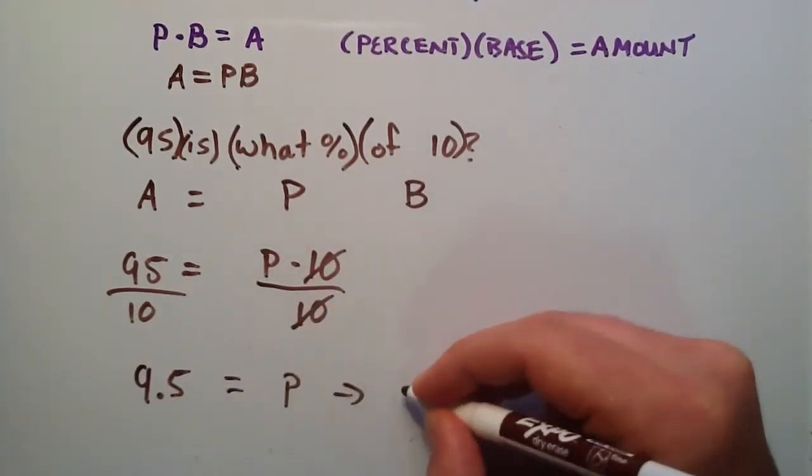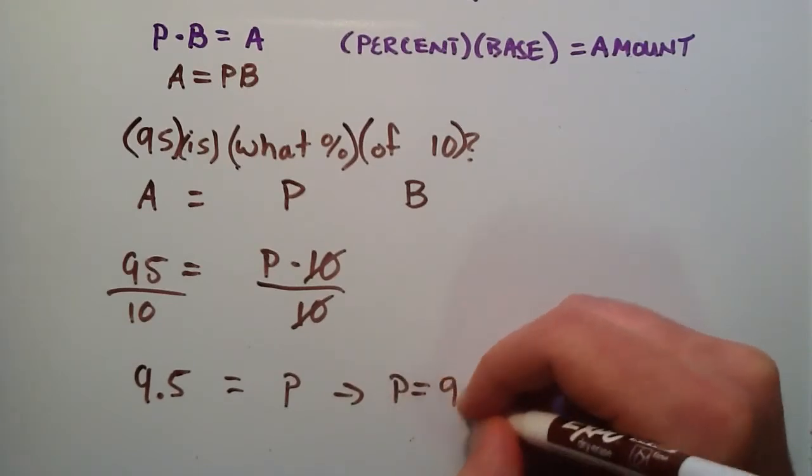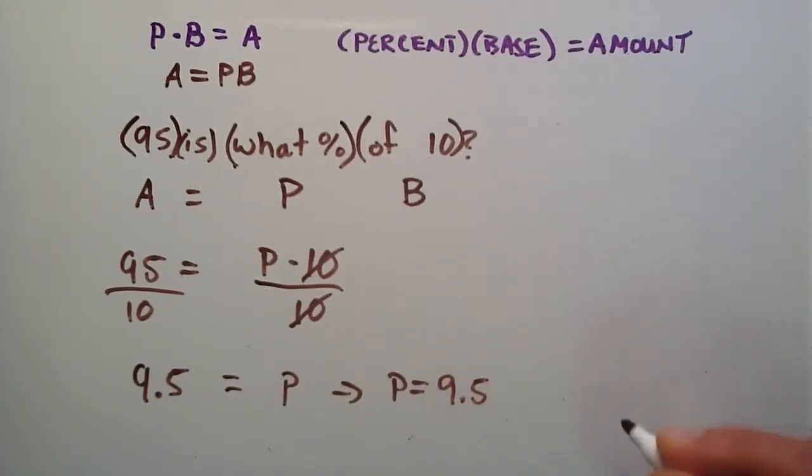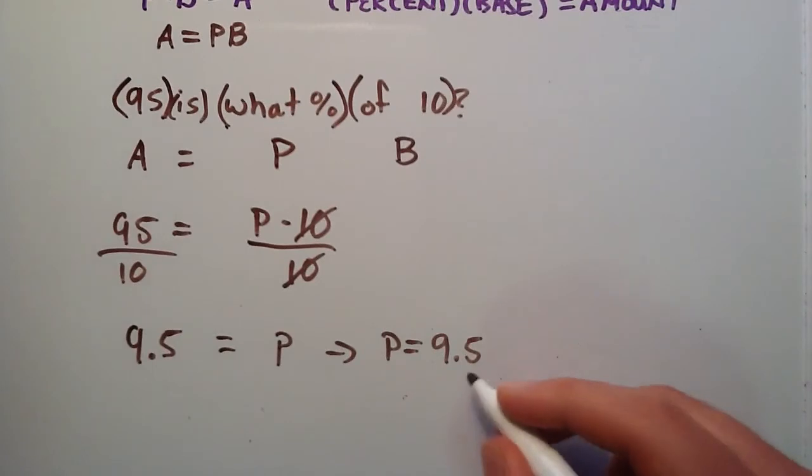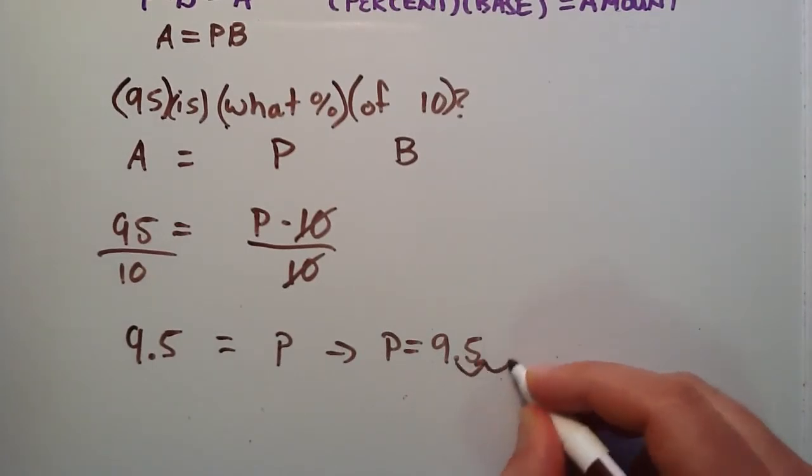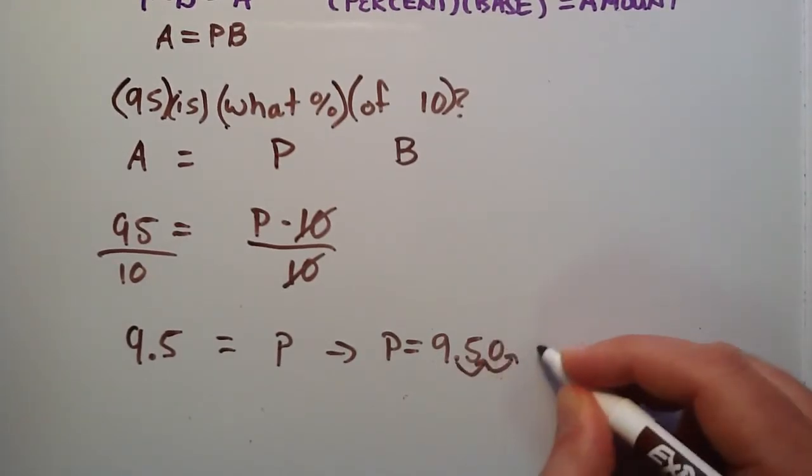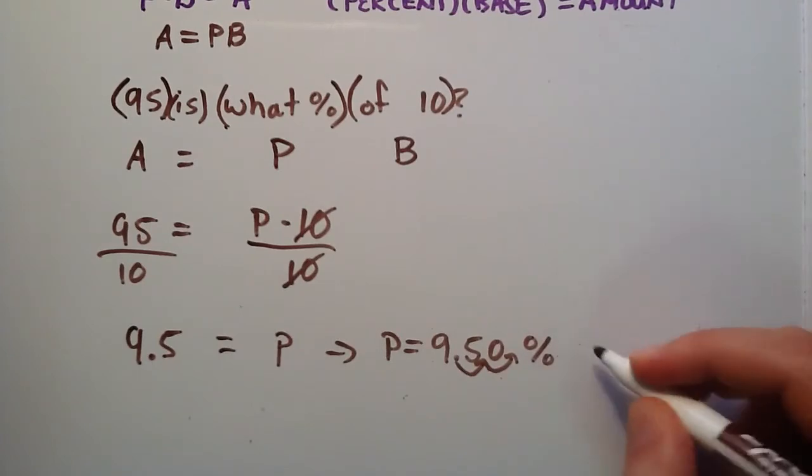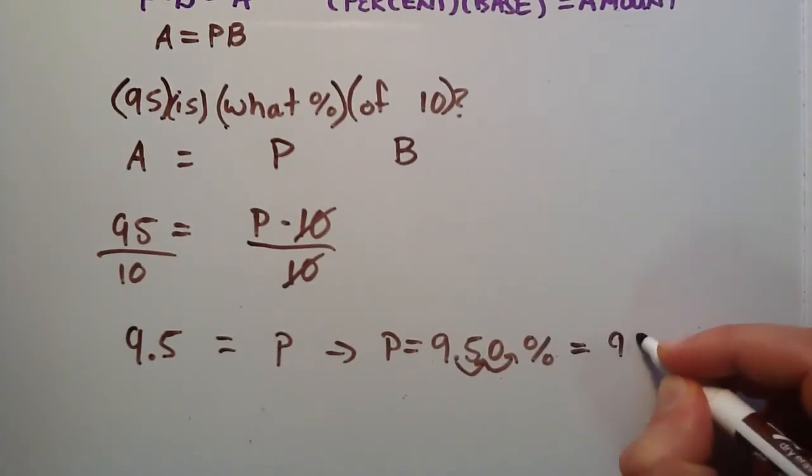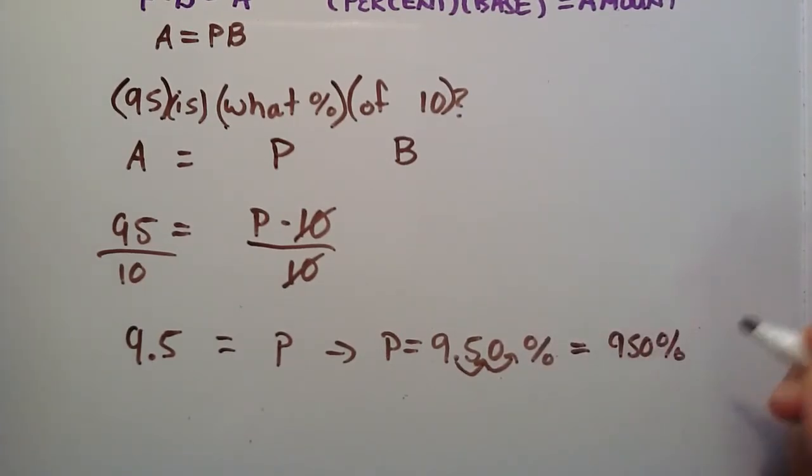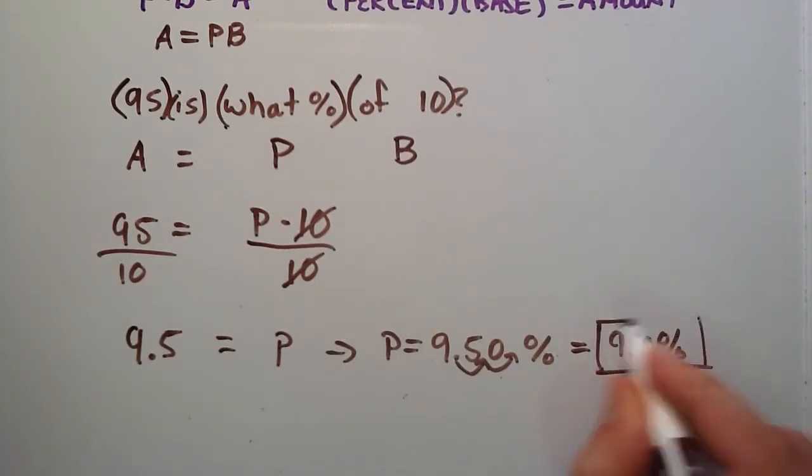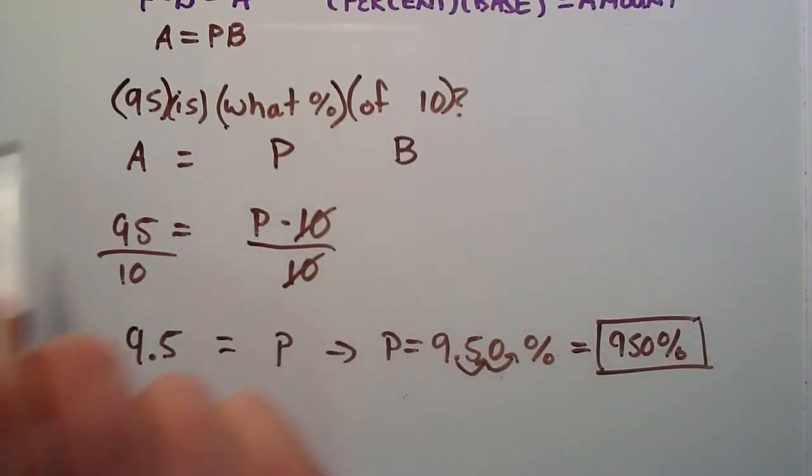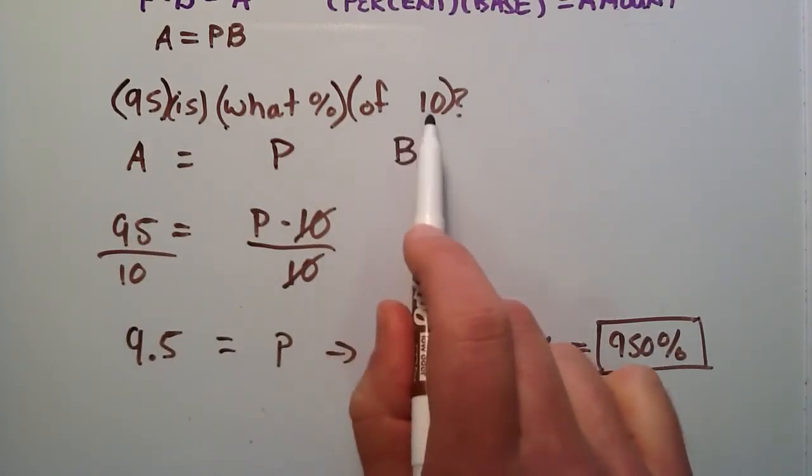We'll just rewrite it over here. P equals 9.5. Now to translate this into a percentage we simply move our decimal two units to the right and put our percent sign there. So that equals 950%. That's our answer. 95 is 950% of 10.